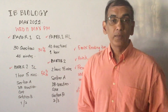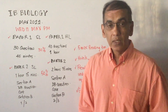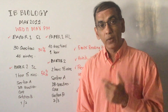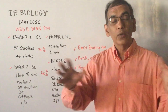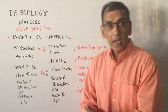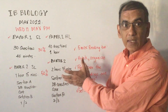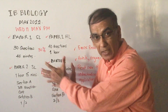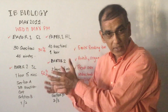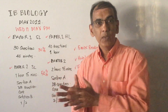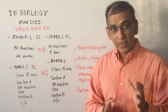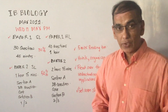Then you come to Section B, where you select one question out of two to bring your total mark for the paper to 50 marks. This carries 50% of your final score in this year's examination, so it's very important that you work really well on that Section B question.